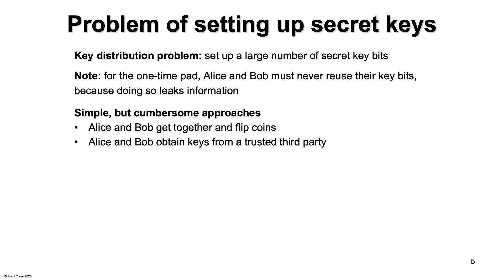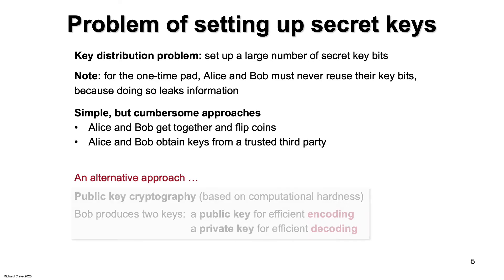There is an alternative approach to the whole private communication problem, which I'd like to review very briefly. It's based on public key cryptography. Public key cryptography is based on the presumed hardness of some computational problem. Bob produces two keys. A public key, which enables messages to be encoded efficiently, and a private key, which enables messages to be decoded efficiently. Bob sends the public key to Alice. And note that, in so doing, Eve can also acquire a copy of the public key. Then Alice encodes her message using the public key and sends the encoded message to Bob.